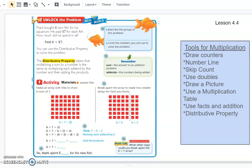Okay, today we're learning the distributive property, and this is lesson 4.4 in GoMath, and we're ready to start. Today we're going to be talking about fish. So Mark bought six new fish for his aquarium. He paid $7 for each fish. How much did he spend in all? So I have my multiplication sentence, find six times $7, and so today we're going to be learning the distributive property.